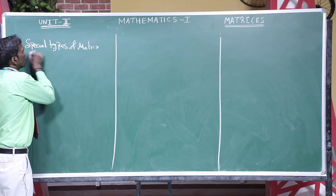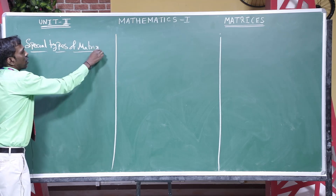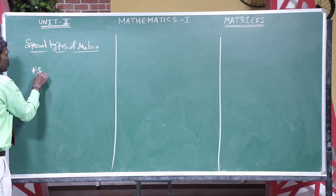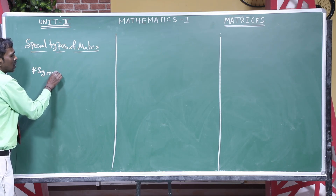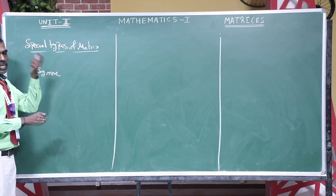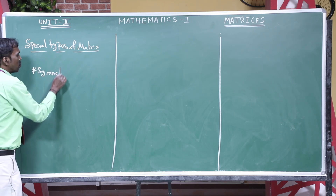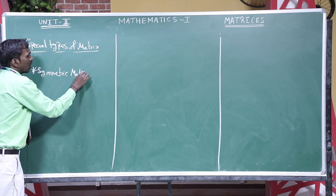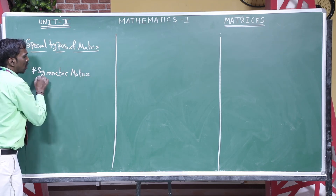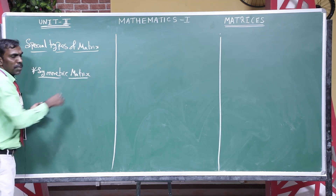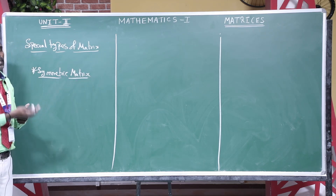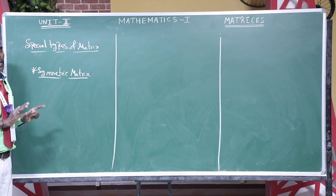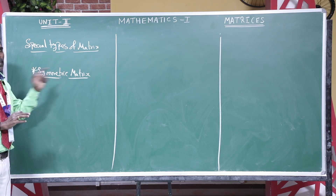First, we are discussing the symmetric matrix. What is a symmetric matrix? Symmetric means the same. If I am taking a square matrix and I transpose this element, again you get the same element. This is called a symmetric matrix.